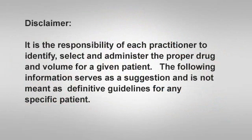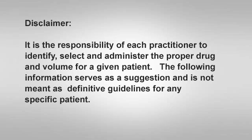It is the sole responsibility of each practitioner to identify, select, and administer the proper drug and volume for a given patient. The following information serves as a suggestion and is not meant as definitive guidelines for any specific patient. The suggested drug and volume to perform the inferior alveolar nerve block injection is 2% xylocaine HCL with 1 part per 100,000 epinephrine. A drug volume of 0.9 milliliters to 1.4 milliliters, equivalent to three-quarters to one full cartridge, is the suggested volume.